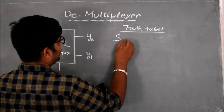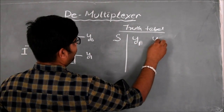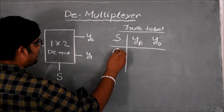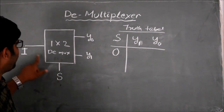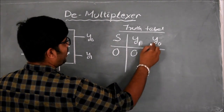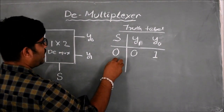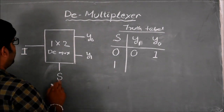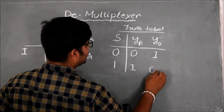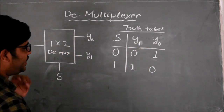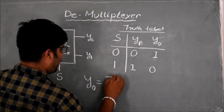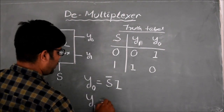This is my selection line S, this is my output line Y1, and this is my output line Y0. We can see whenever S is equal to 0, Y1 is equal to 0 and Y0 is equal to I. And when S is equal to 1, I is routed to Y1, so Y1 is equal to I and Y0 is equal to 0. From the truth table, I can write the expression: Y0 is equal to S-bar times I, and Y1 is equal to S times I.